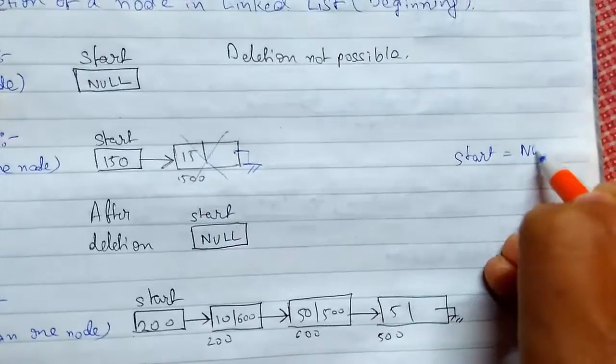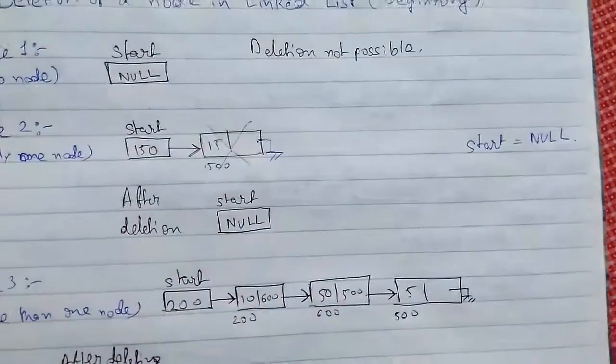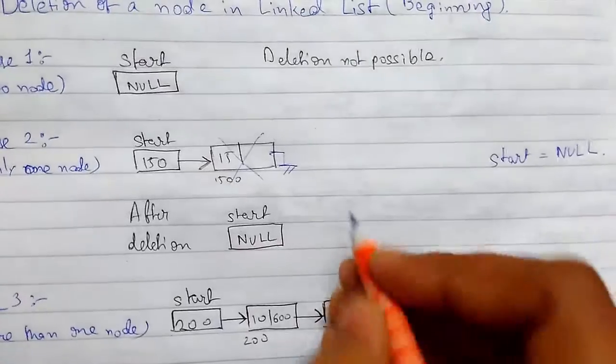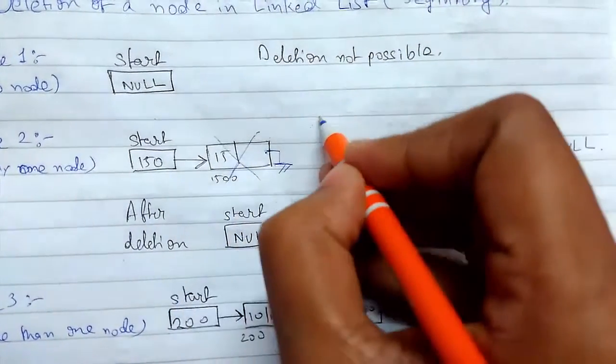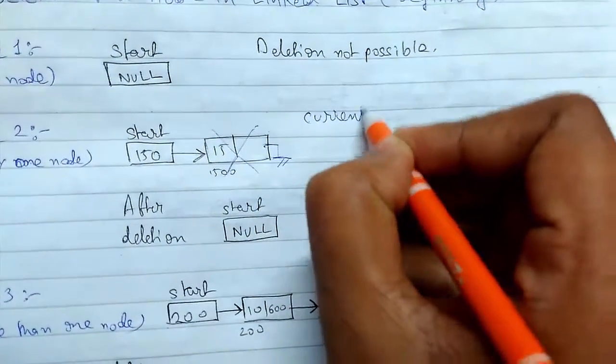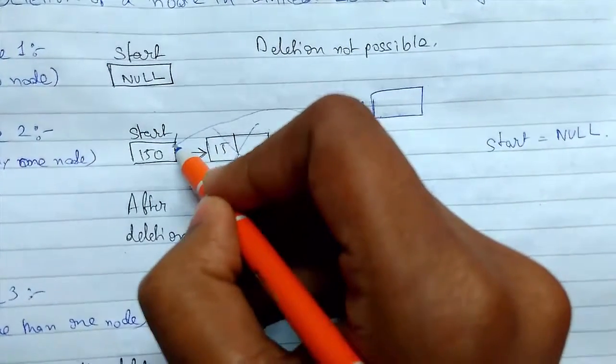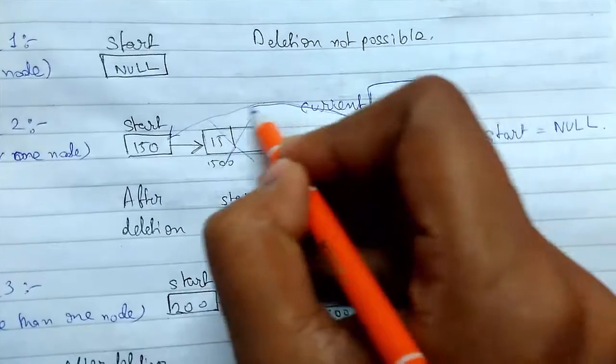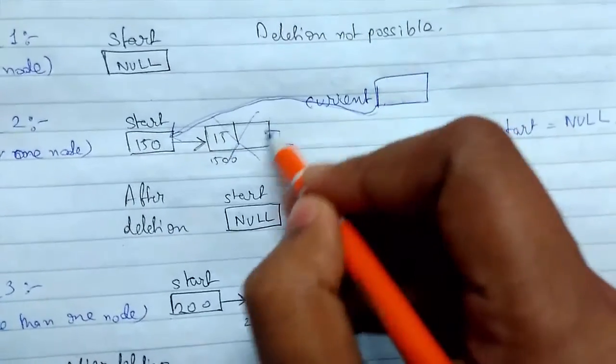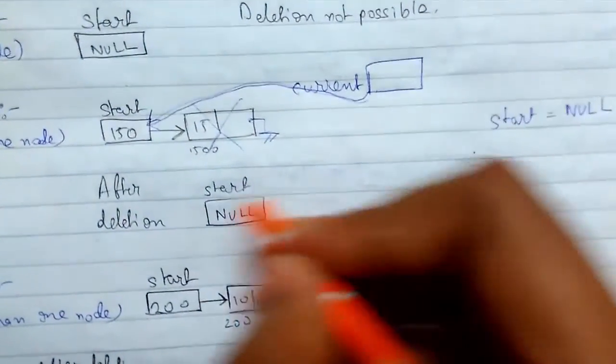Start is set to null. And we need a current here also, just a current variable like we have previously used. So current initially is pointing here. Now we need to, when we move forward, we will just free current.